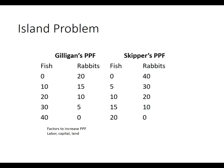Let's graph this. We can do rabbits on one axis and fish on the other. We'll mark out five, ten, fifteen, twenty, twenty-five, thirty, thirty-five, and forty on each axis. Let's do Gilligan first — they're on a deserted island. Gilligan can catch zero fish and twenty rabbits, so that point sits at twenty on the rabbit axis and zero on the fish axis.